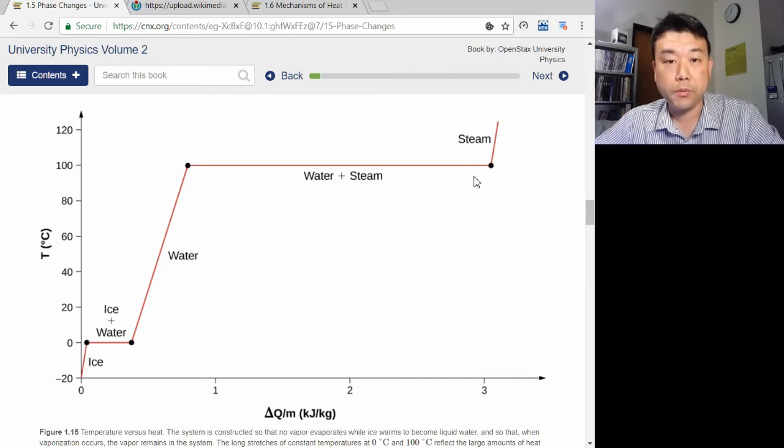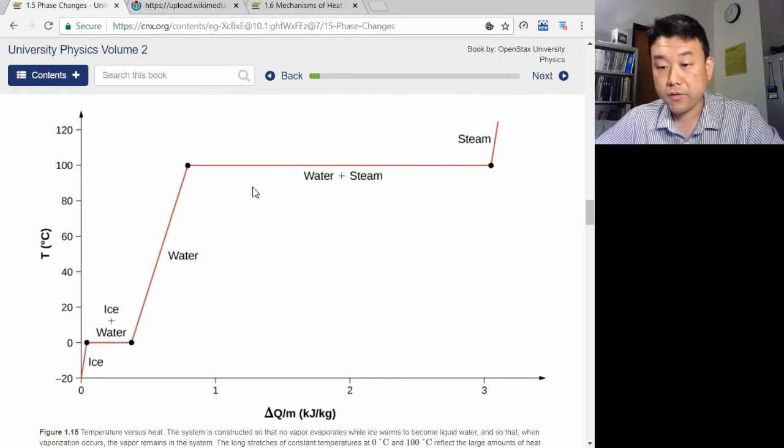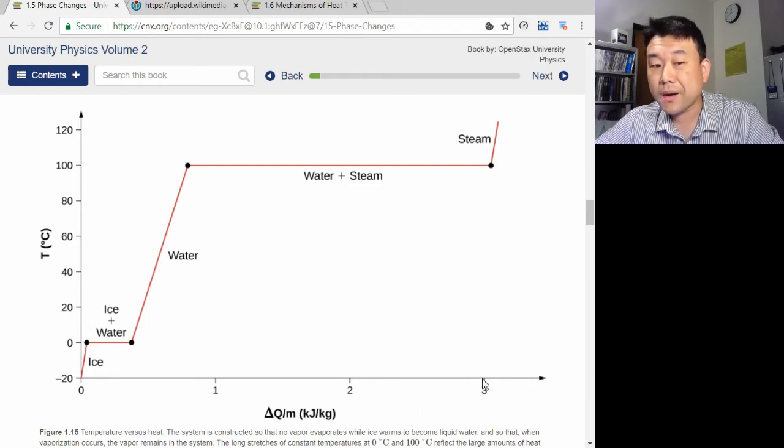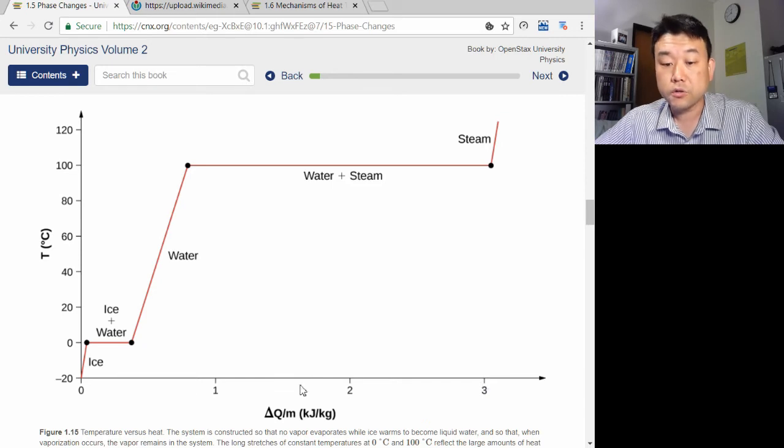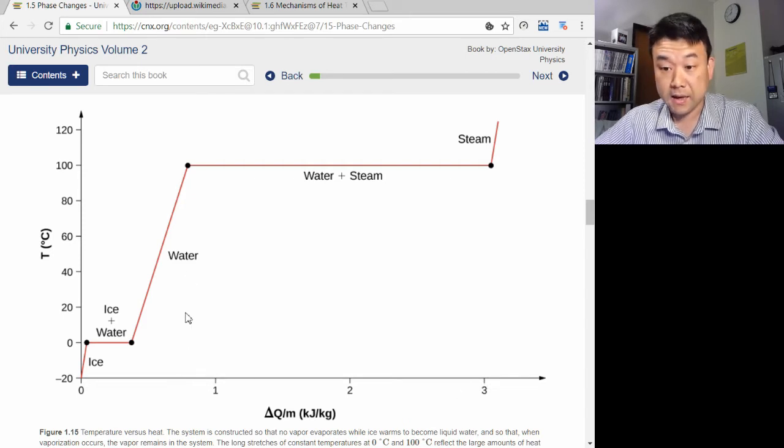This latent heat of vaporization is quite substantial. As you see in this graph, it takes more energy to boil 1 kg of water already at 100 degrees Celsius than the amount of energy it takes to bring 1 kg of very cold ice to 100 degrees Celsius. You can look at the distance along the horizontal axis to see how much heat it takes to boil away all the water.